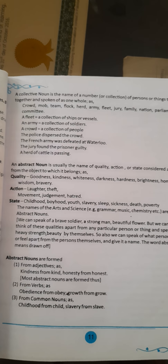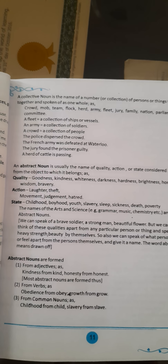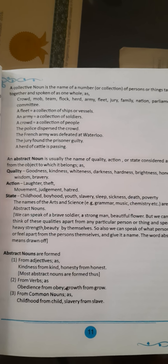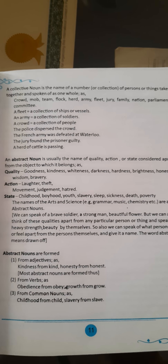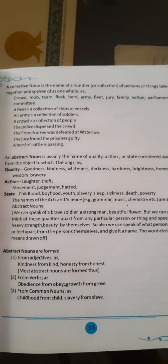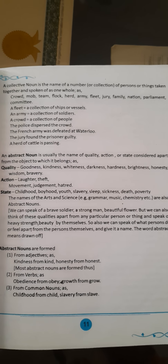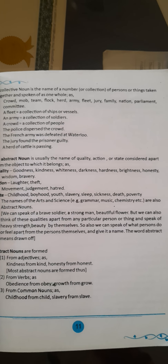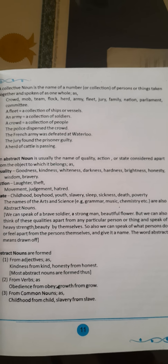Action examples: laughter, theft, movement, judgment, hatred. State examples: childhood, boyhood, youth, slavery, sleep, sickness, death, poverty. The names of the arts and sciences — for example grammar, music, chemistry — are also abstract nouns.